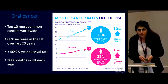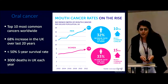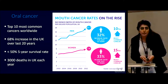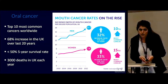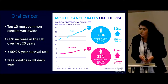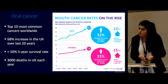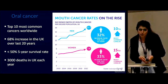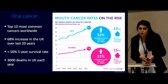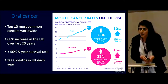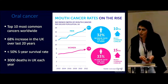Oral epithelial dysplasia is a diagnostic term used to describe a chronic progressive pre-malignant disorder affecting the oral cavity. It's the precursor to oral squamous cell carcinoma, which is amongst the top 10 most common cancers in the world. Unfortunately, it has an increasing incidence and a worsening prognosis, and every year there are almost half a million new cases of oral cancer diagnosed in the world.